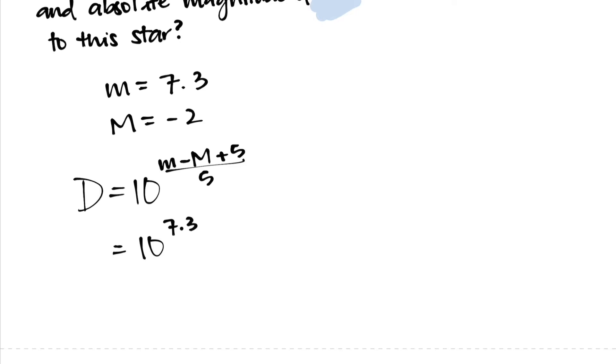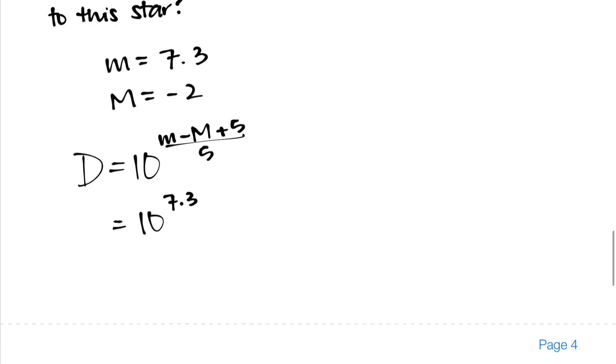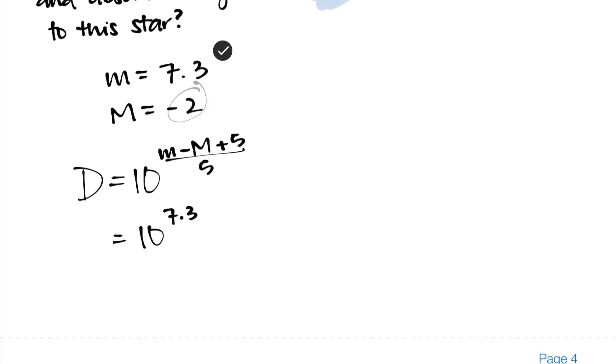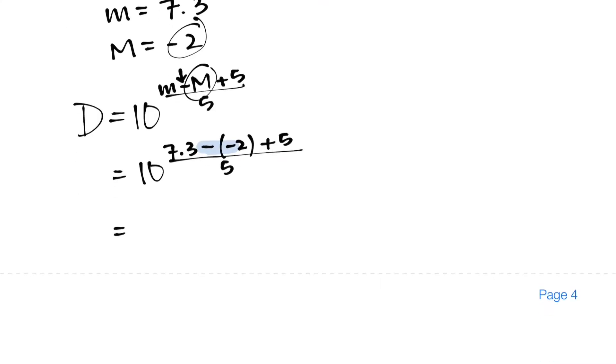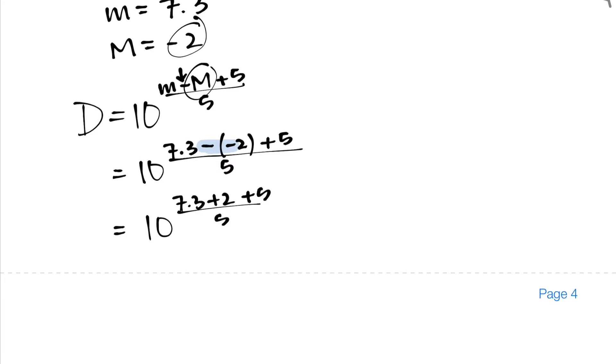And now in order for us to plug in negative 2 for uppercase M, we have to make note of the fact that there's already a negative there in front of the capital M. So we have minus negative 2 plus 5 all over 5. Now if we go back to the ancient rules of algebra, anytime we have two negatives back to back that's going to turn into a positive. So in reality what we're actually dealing with here is 10 to the power of 7.3 plus 2 plus 5, all over 5.